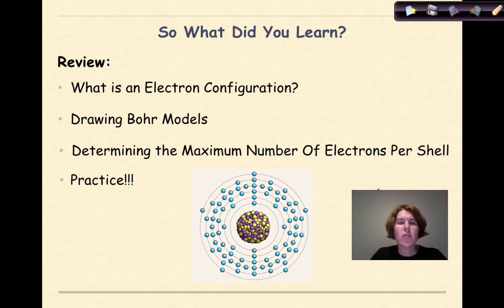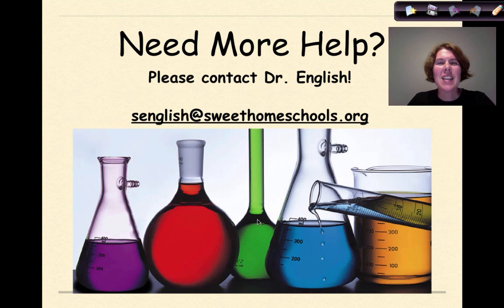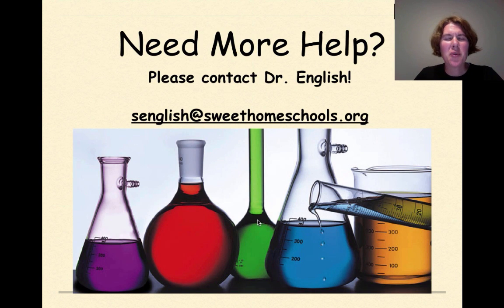So what did you learn? We went over what is an electron configuration and how it organizes electrons. We talked about drawing Bohr models. We looked at determining the maximum number of electrons per shell. And finally, we did a little bit of practice. Need more help? Feel free to contact me. Have a great day.